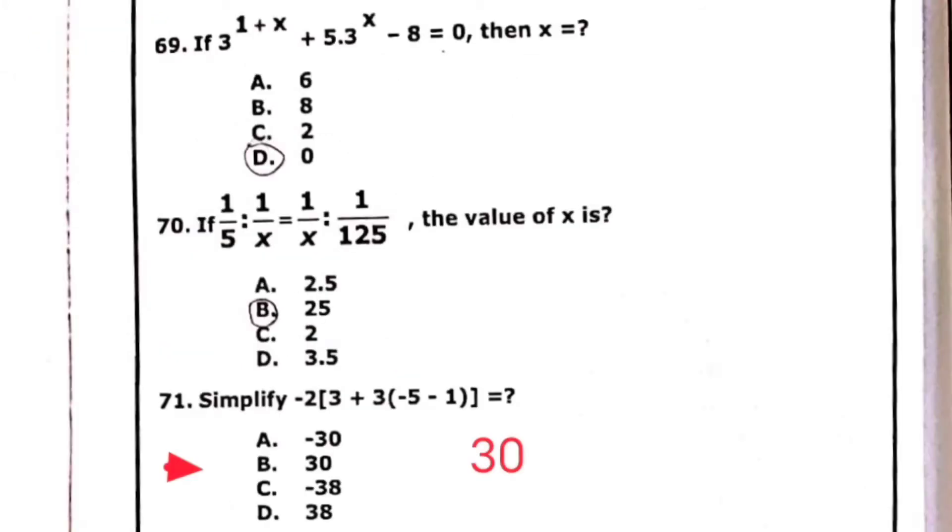Question 69: if 3 raised to power 1 plus x, plus 5 times 3 raised to power 1 over x, minus 8 equals 0, then x equals. The option D is correct.